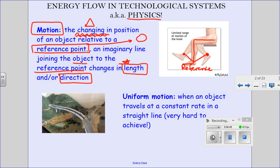That's how you describe what motion is — when an object changes its position compared to a reference point. If I asked you to describe what motion is and you didn't say something about a reference point, I don't think I would give you the mark. You don't have to use that exact term, but you have to give me an idea that we are going to compare before and after: where is the object now, where was it before? Does anyone want to ask about that description of motion?